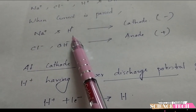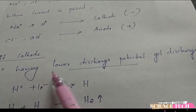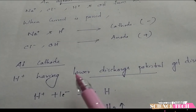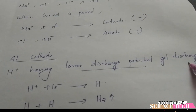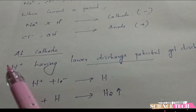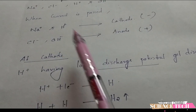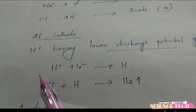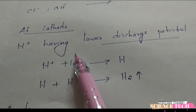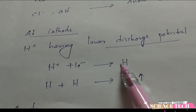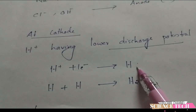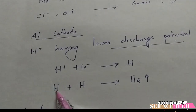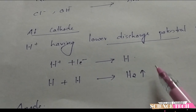At the cathode, both Na+ and H+ are present. The ion with the lower discharge potential is discharged preferentially. H+ has a lower discharge potential than Na+, so H+ is discharged. H+ gains an electron to form a hydrogen atom. Since hydrogen is diatomic, two hydrogen atoms combine to form H2 gas, which evolves at the cathode.